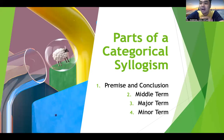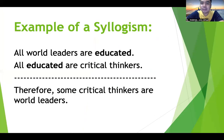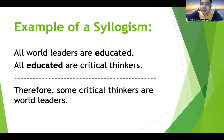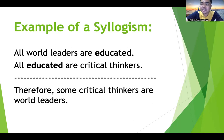We also have other parts of the categorical syllogism: the middle term, major term, and minor term. For example: 'All world leaders are educated' — that is the first proposition. 'All educated are critical thinkers' — that is the second proposition. Therefore, some critical thinkers are world leaders. The premises are 'all world leaders are educated' and 'all educated are critical thinkers' — those are the reasons that lead to the conclusion, which is indicated by the word therefore.